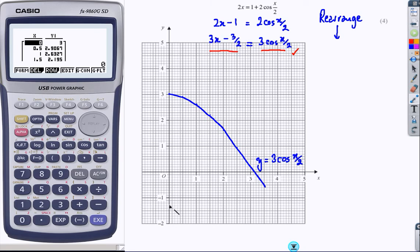Gradient 3, intercept minus 3 over 2. That's something of that sort, there we go.